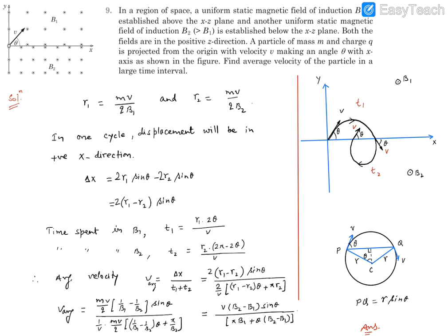In one cycle, the particle starts at point O and ends at a displaced location, so the displacement is the straight-line distance between these two points. We now have both the total time (t1 + t2) and need to determine the displacement. The displacement corresponds to chord lengths: one chord for the upper circle and one for the lower circle. It is not a semicircle unless theta equals 90°; it depends on theta.